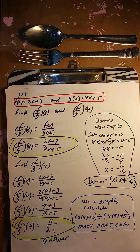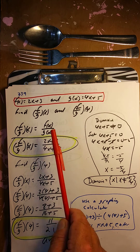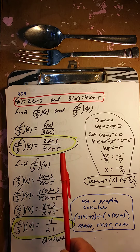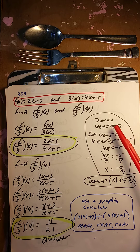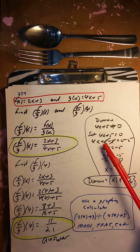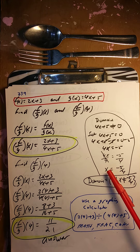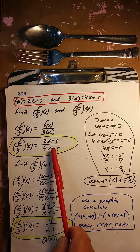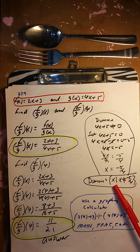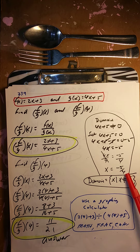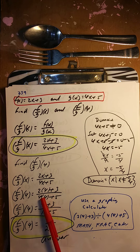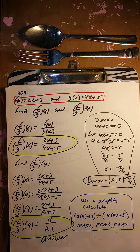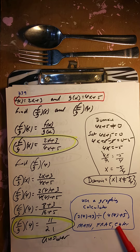f divided by g of x: f of x over g of x is the fraction 2x plus 3 over 4x plus 5. Remember you can't have 0 in the denominator. So 4x plus 5 can never equal 0. Set 4x plus 5 equals 0: subtract 5, divide by 4, and x equals negative 5 fourths. That value would make the denominator 0. So the domain is: the set of x such that x is not equal to negative 5 fourths. To find f over g of 4: 2 times 4 plus 3 is 11, 4 times 4 plus 5 is 21. So the answer is 11 over 21.